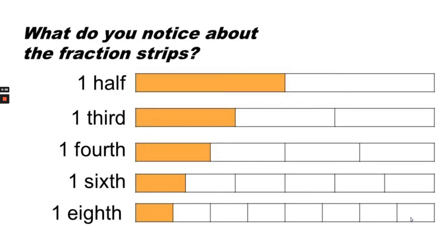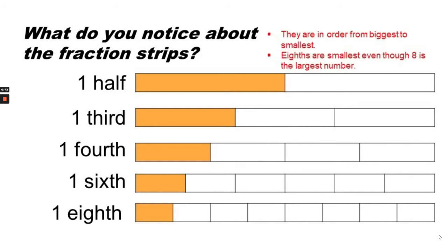What do you notice about the fraction strips? They are in order from biggest to smallest. Eighths are the smallest, even though eight is the largest number.